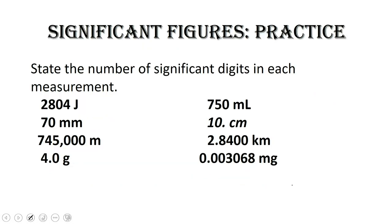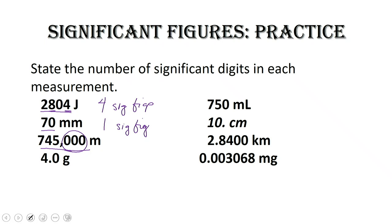Let's count the number of sig figs in each measurement. Starting with 2,804: all non-zero digits are significant, and the zero sandwiched in between non-zero numbers is significant — so we've got four sig figs. Next, 70 millimeters: if the number does not have a decimal place, all trailing zeros are non-significant, so this is one sig fig. Our next number, 745,000: those trailing zeros again — if there's no decimal place, they're not significant, so we have three sig figs.